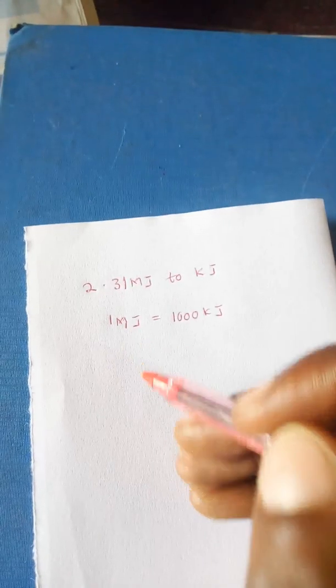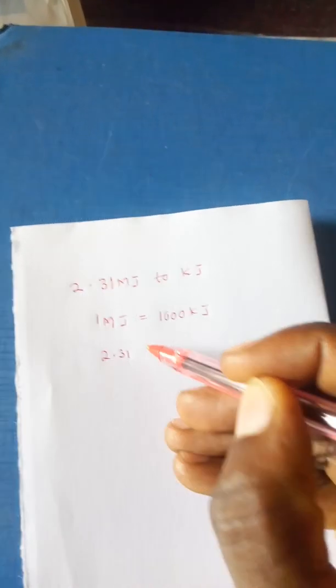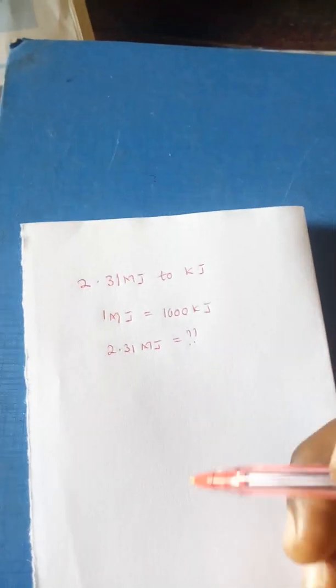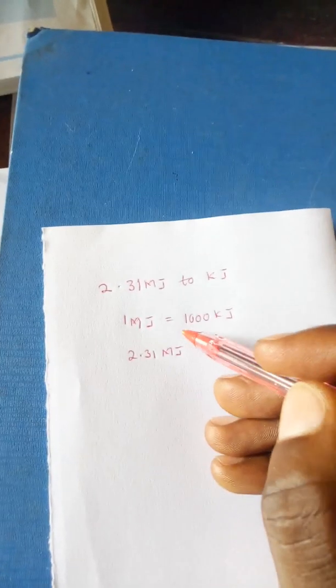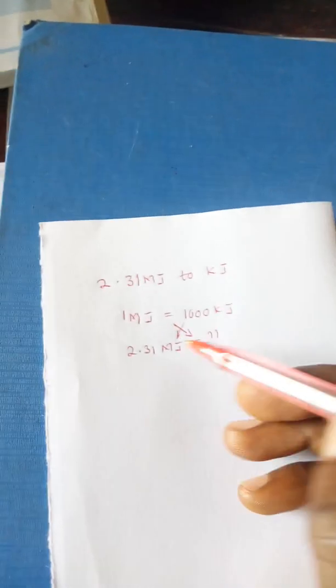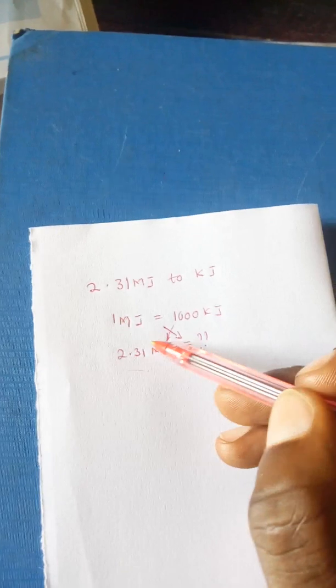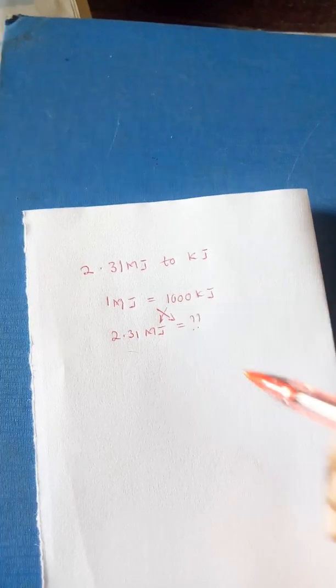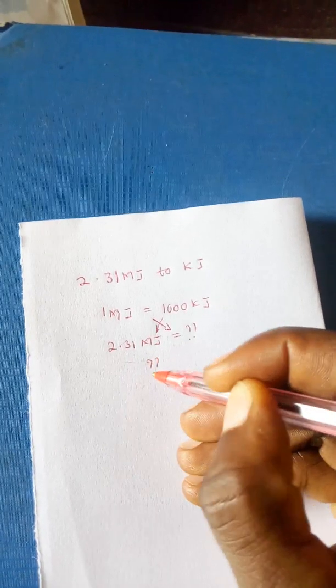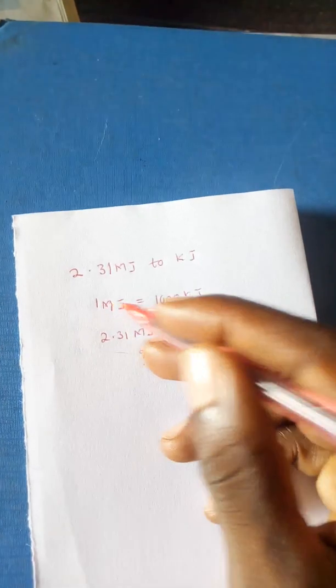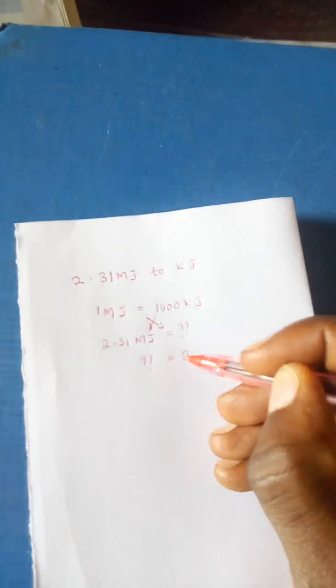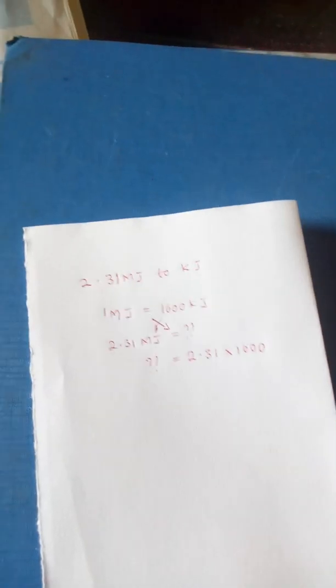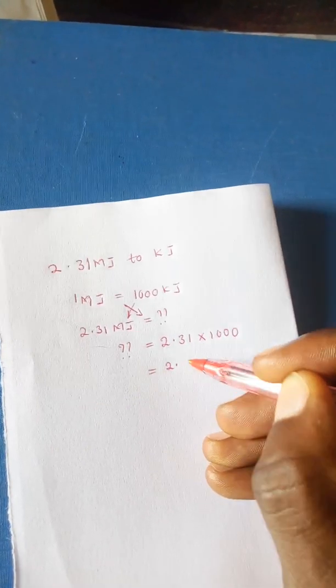This means that our 2.31 megajoules will be equal to an unknown number of kilojoules. In this case, for us to get it, we shall multiply 2.31 megajoules by 1000 kilojoules. Therefore, our kilojoules when we multiply by that will give us an unknown which will be equal to 2.31 times 1000 kilojoules.